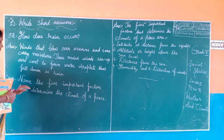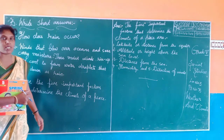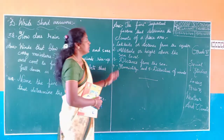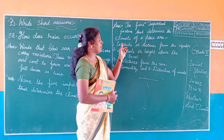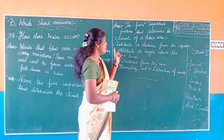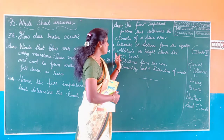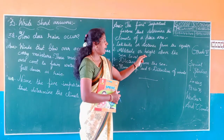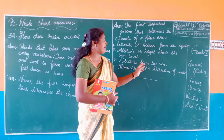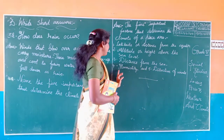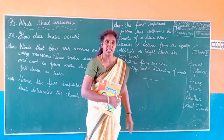Question number 4: Name the 5 important factors that determine the climate of your place. Answer: The 5 important factors that determine the climate of your place are — number 1: latitude or distance from the equator; number 2: altitude or height above the sea level; number 3: distance from the sea; number 4: humidity; and number 5: direction of winds.